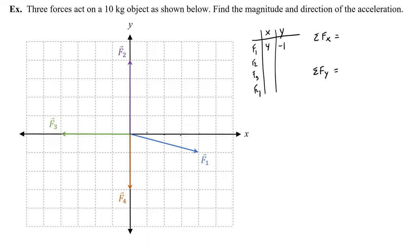F2 has no x component because it points up, and it points up 4, so 4 newtons for the y component. F3 doesn't point up or down, so its y component is 0, and it goes to the left 4, so negative 4 for the x component. For the fourth force, it goes down with no x component — negative 3 newtons of force for that vector.